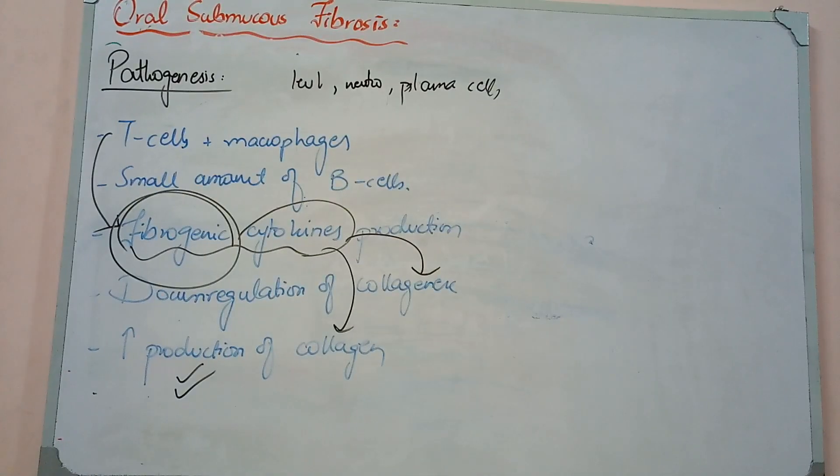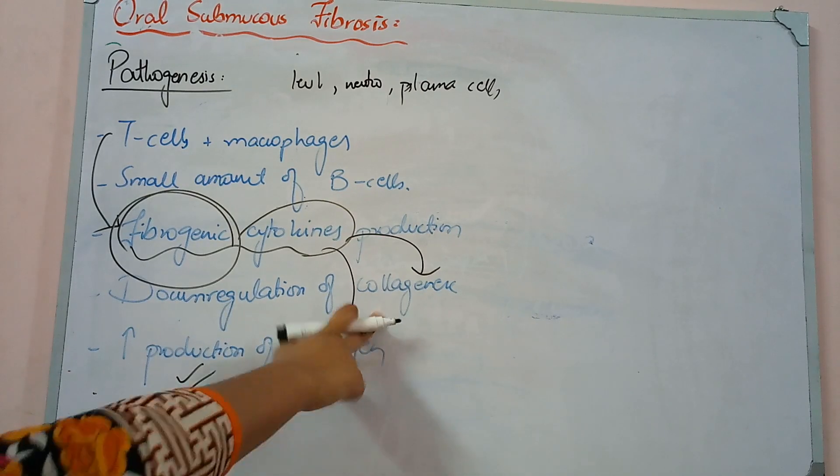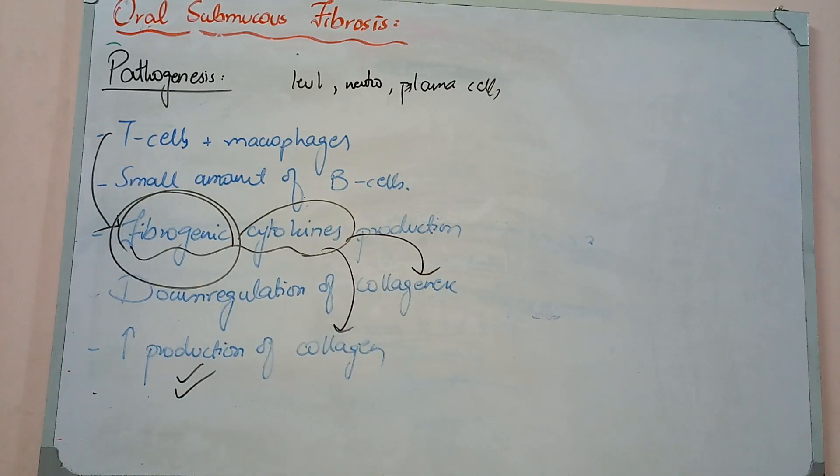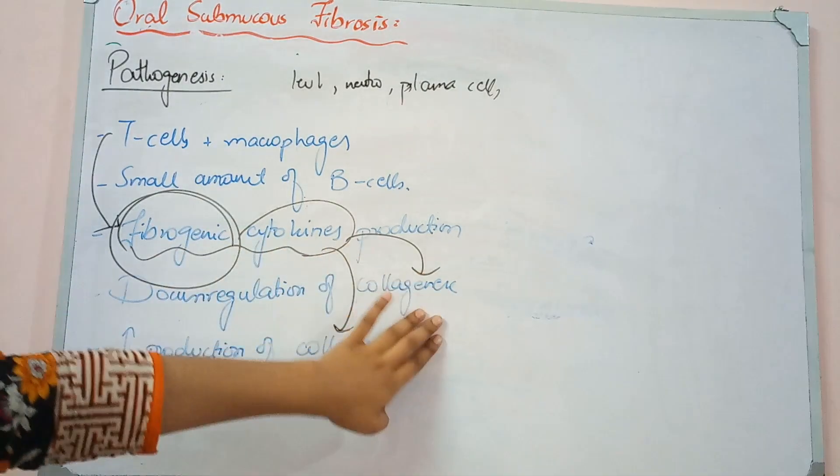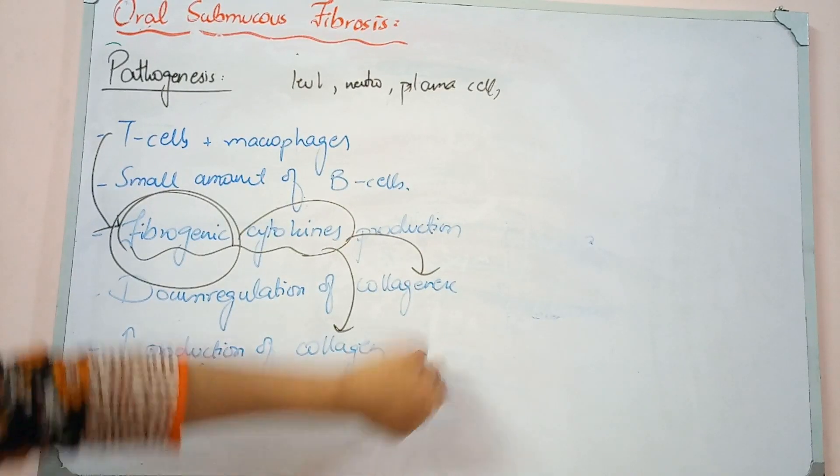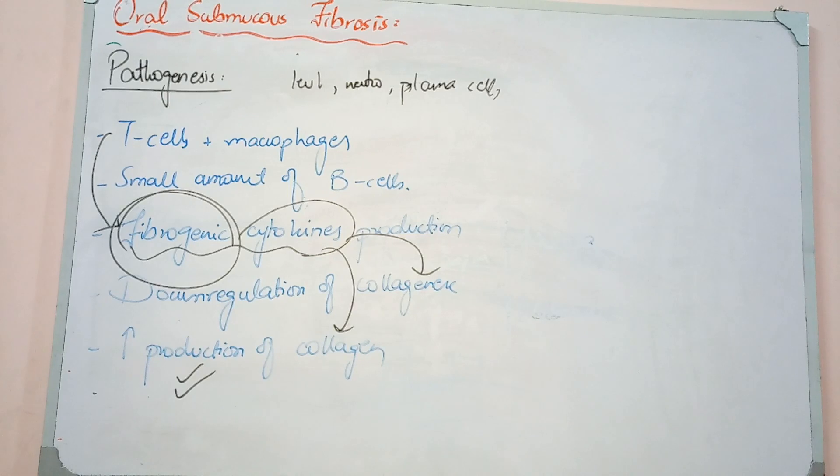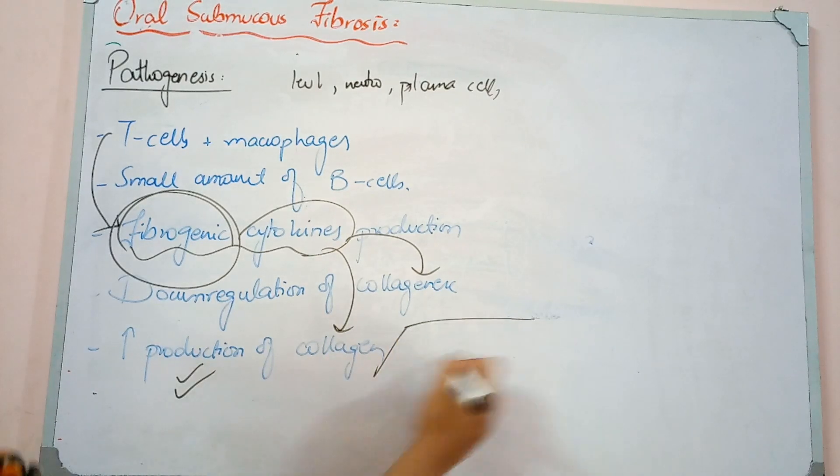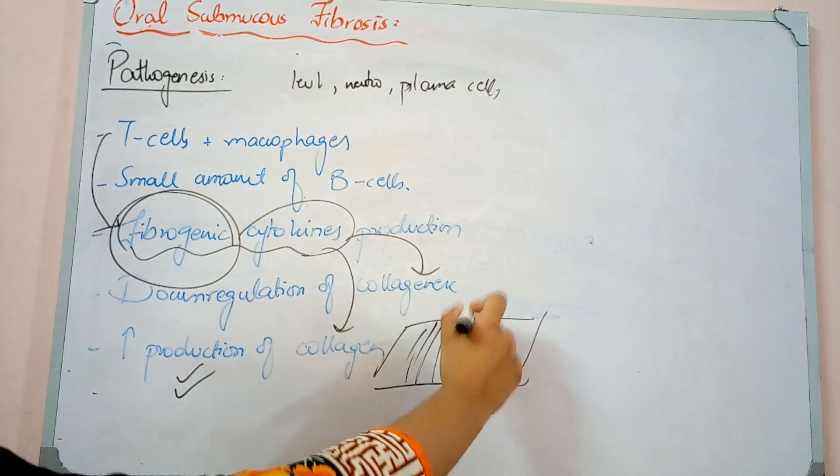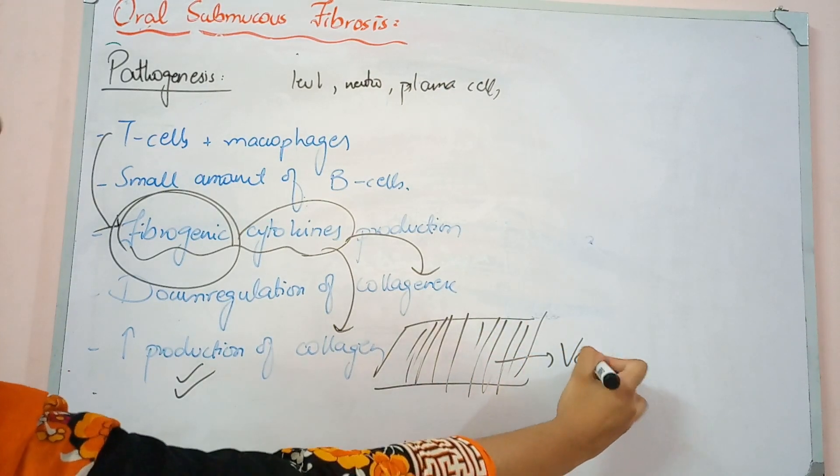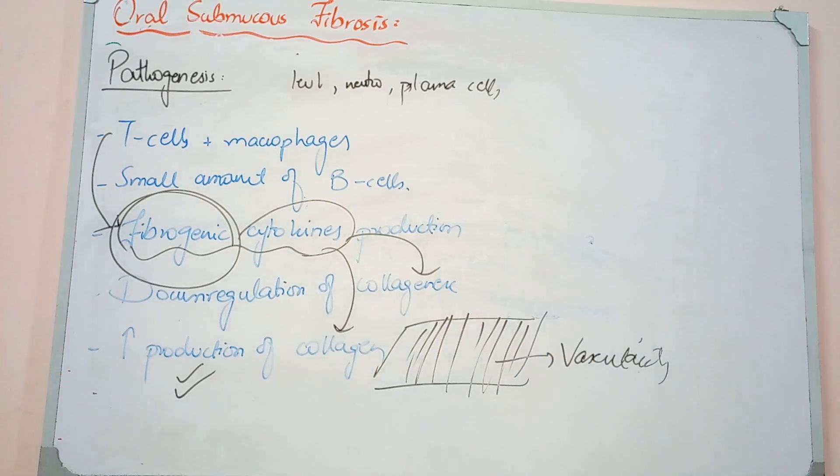Collagen is degraded by collagenase enzyme. The cytokines inactivate or decrease collagenase production, so collagen degradation decreases while production increases. The result is collagen deposition and fibrosis development, causing mucosa and lamina propria stiffening and hardening. Vessels lose their appropriate space, and with hardening and thickening, vascularity completely ends. This is the pathogenesis.